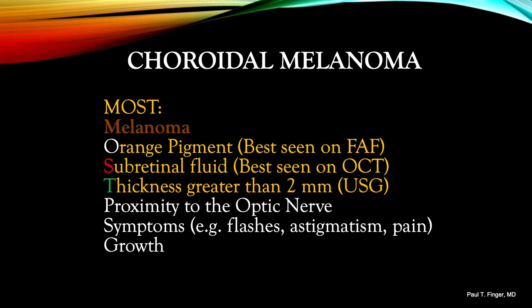In this summary slide about MOST — where melanoma equals orange pigment, subretinal fluid, and thickness greater than 2 millimeters — orange pigment is best seen on fundus autofluorescent imaging. Subretinal fluid is best seen on OCT, including three-dimensional reconstruction. Thickness greater than 2 millimeters is still best measured by ultrasonography. Other risk factors include proximity to the optic nerve, symptoms, and most importantly, growth. For differentiating small melanomas from large or suspicious choroidal nevi, you can use the mnemonic MOST.